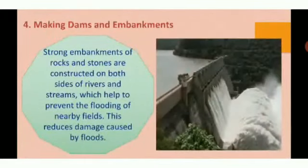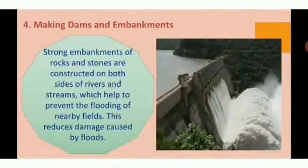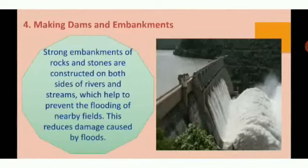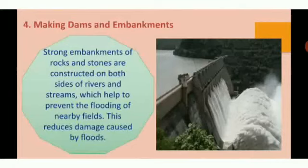The next method is making dams and embankments. In the picture, we can see that dams are really helpful for soil conservation. When we talk about embankments, they are strong walls of rocks made near the banks of rivers. The lands and farms near those rivers would suffer if floods come, as running water would easily enter and destroy them. Embankments protect them and prevent flood water from entering, making it an effective method to protect topsoil from getting washed away.